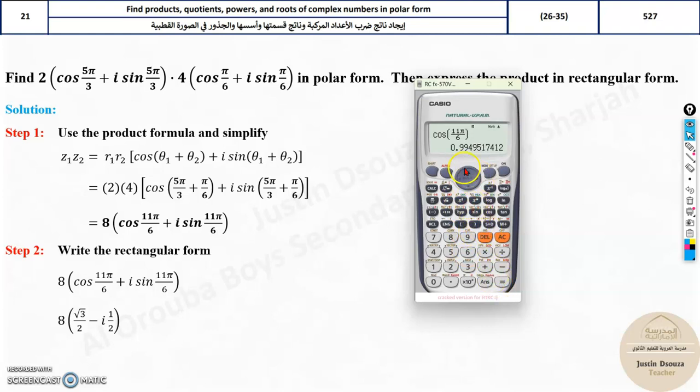I should get root 3 by 2. Now, let me change it. Shift mode and 4. Now it's in radian. Now look, the answer is correct. Same thing with sine. Only thing is change over here to sine and you will get the answer, negative half. i will remain as it is. And now we can multiply 8 inside.